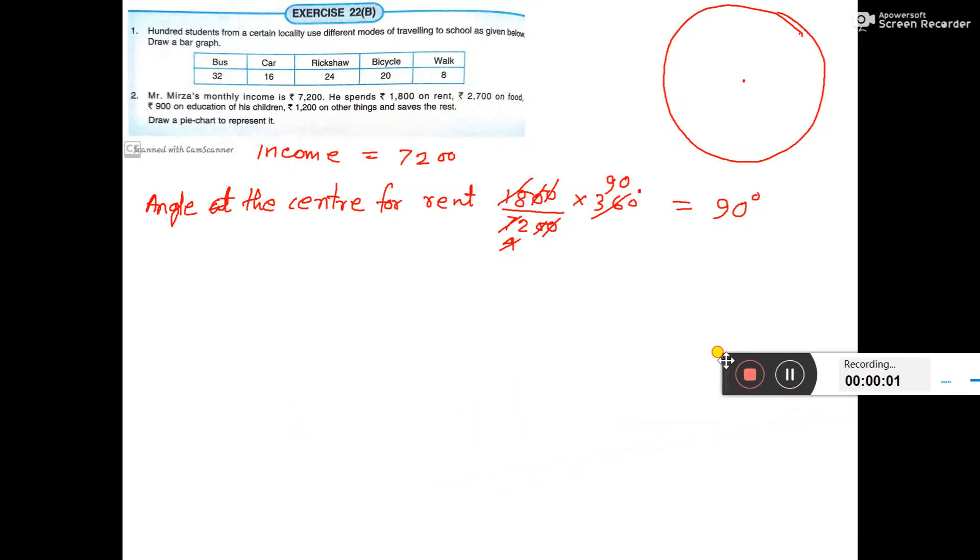Number two, I am doing this. Income is 7200, spend 1800 on rent. So angle at the center for rent: it will be 1800 by total 7200 into 360 degrees. We have got 90 degrees.